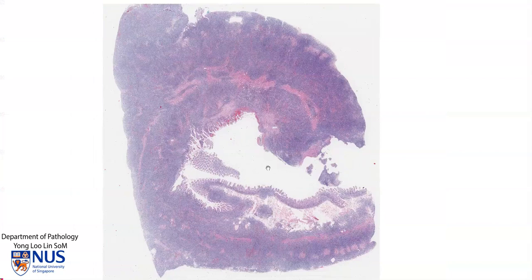In summary, this is an example of a MALT lymphoma, which is a type of marginal zone lymphoma affecting the small bowel. We have sheets of lymphocytes composed of a mixed population of small, medium-sized, and larger lymphocytes. There is no evidence of transformation into an aggressive large B-cell lymphoma. We also have an area of ulceration of the mucosa, which may potentially lead to GI bleeding. Thank you.